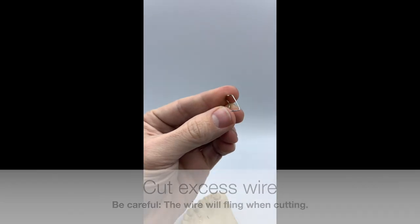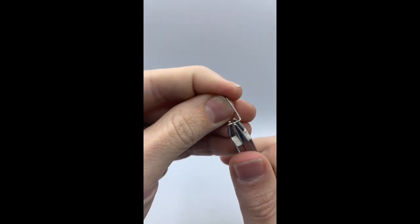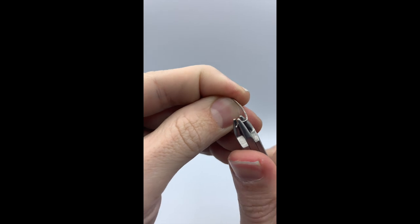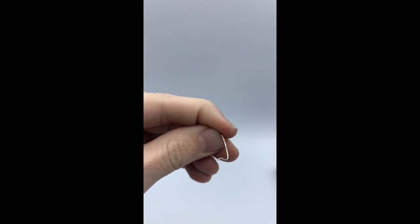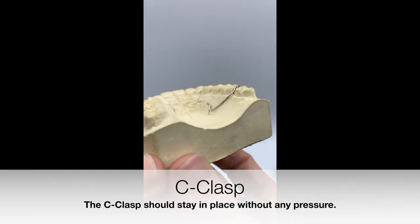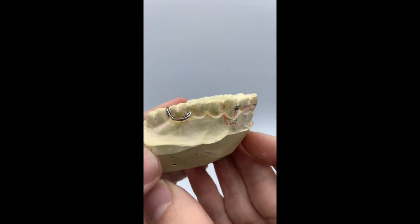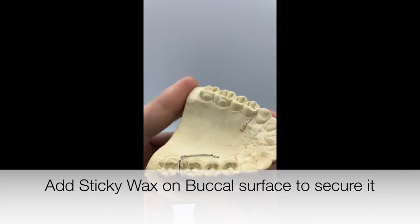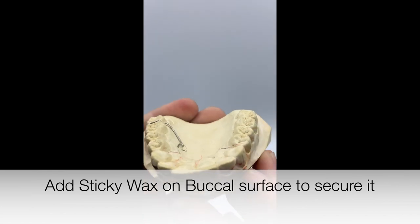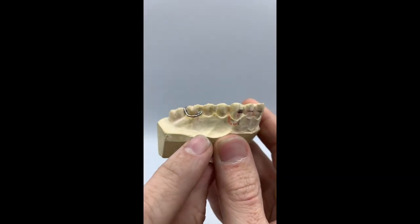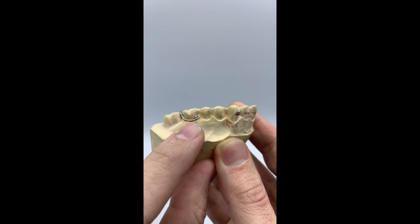Any excess wire on the tail we will then cut off. You can finish your wire either straight or make a little design as seen above. The clasp should sit on the model without any pressure. Repeat the same for the opposite side. You want to add sticky wax to the buccal surface before we start our acrylic work to hold it in place.